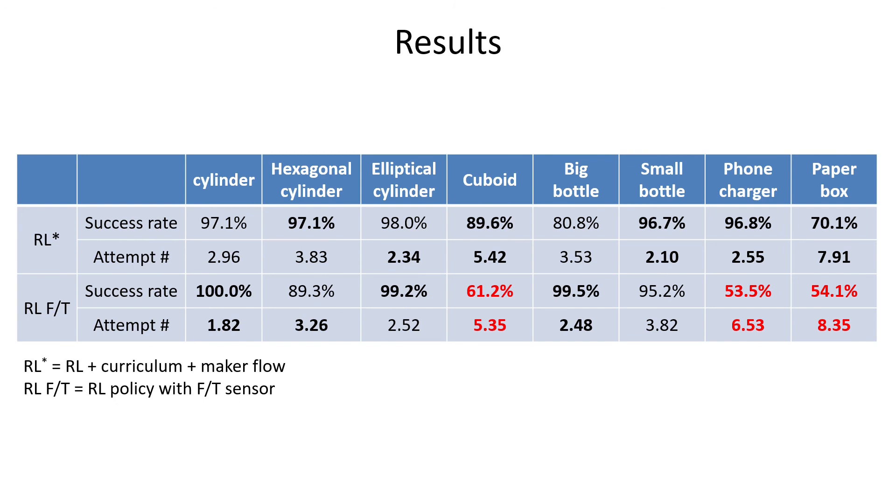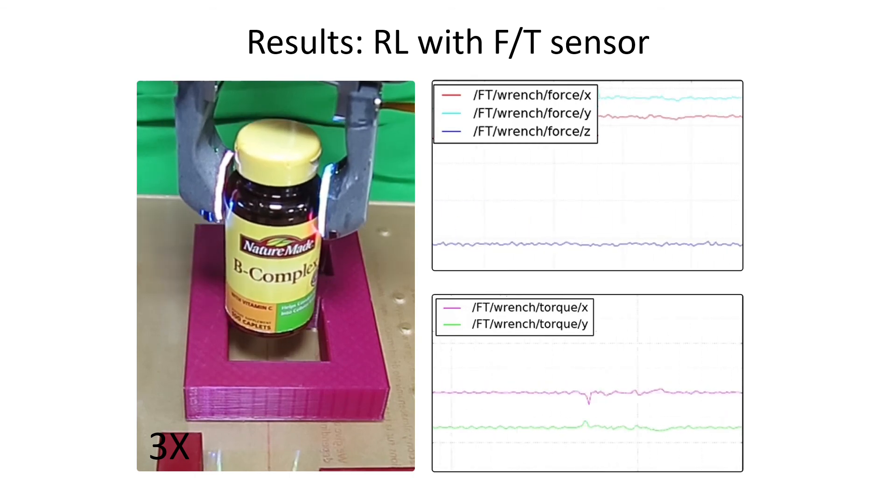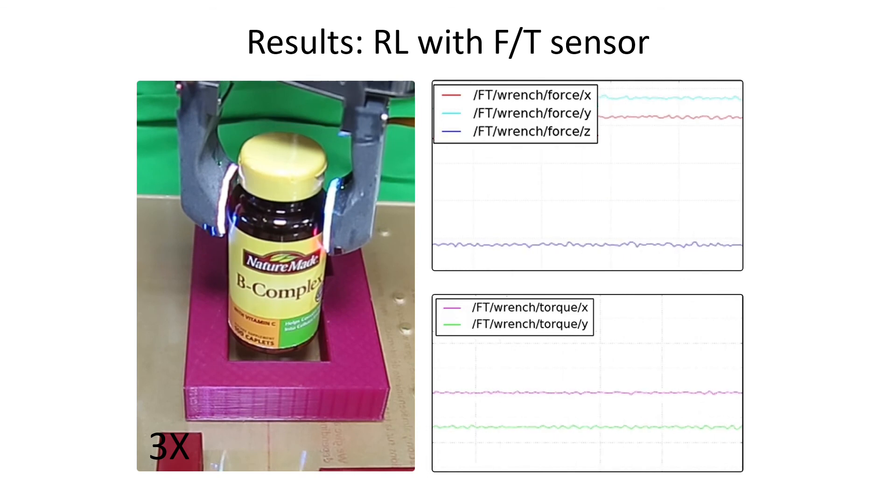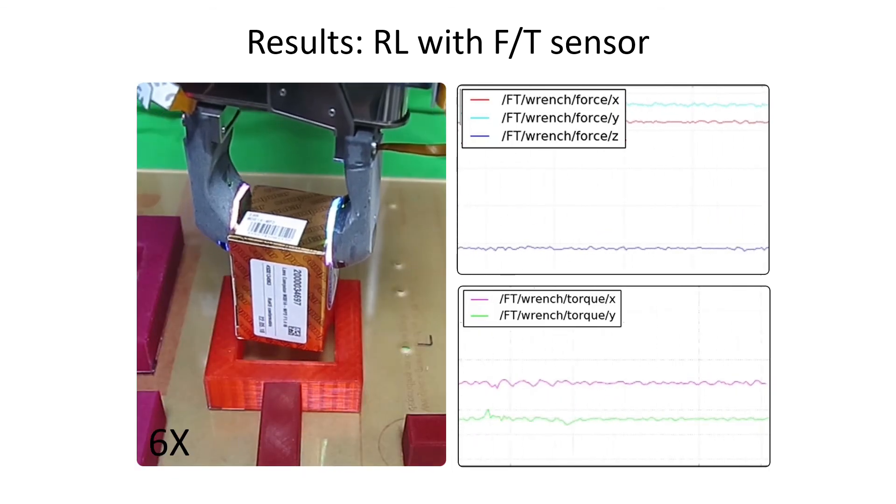Here we show a more in-depth comparison between RL policies with tactile sensor and force-torque sensor. The force-torque sensor-based RL policy works well with symmetric cylindrical objects. However, it had a hard time to insert non-symmetric objects like cube-shaped objects. As shown in this video, the force-torque-based RL policy easily inserts the bottle within 3 attempts, but failed to insert the box after many attempts.